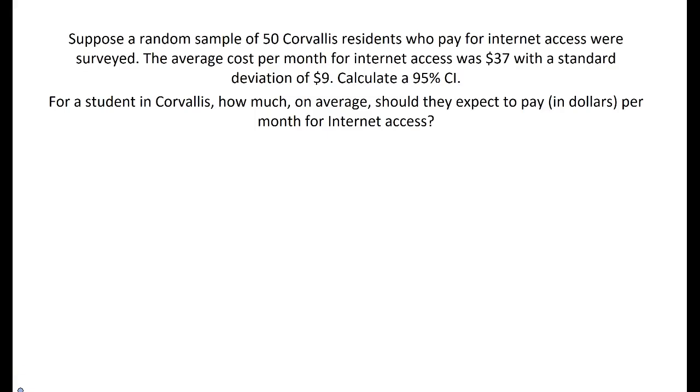In this video, we'll show you how you can calculate a one-sample t-confidence interval. Let's suppose a random sample of 50 Corvallis residents who pay for internet access were surveyed. The average cost per month for internet access was $37 with a standard deviation of $9.